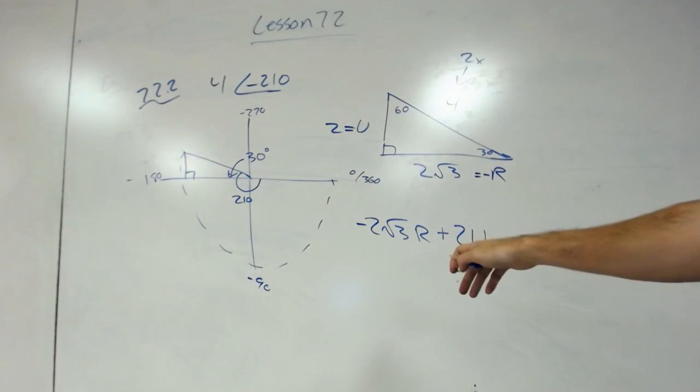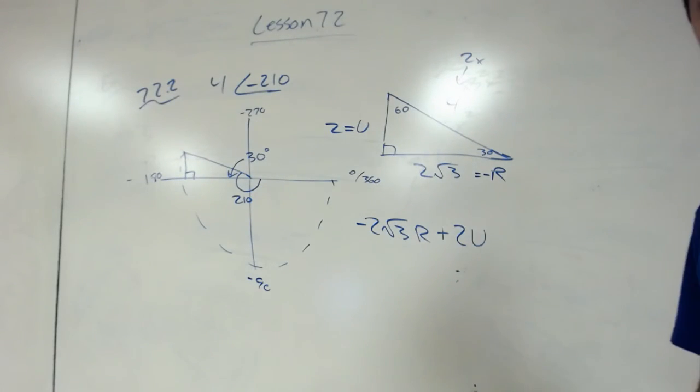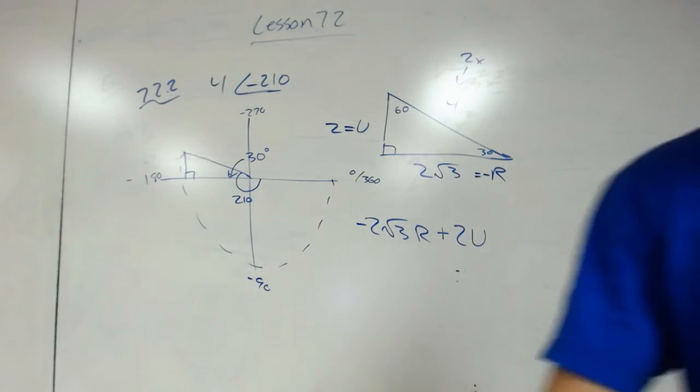We can leave it in that form, and that's all you do for negative angles - you simply work backwards. That's the end of lesson 72.